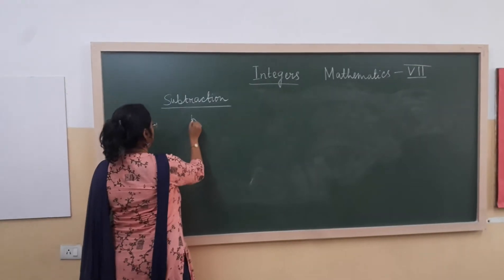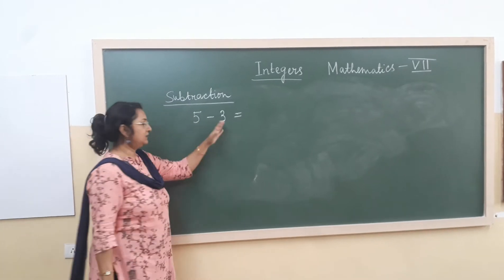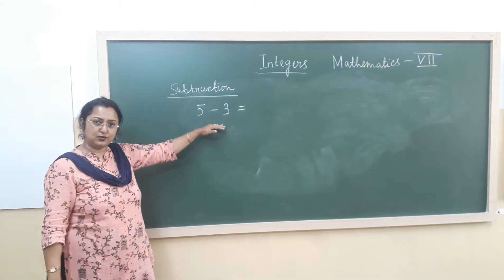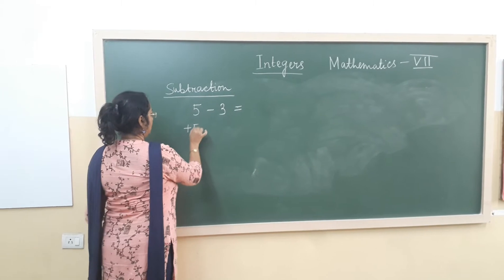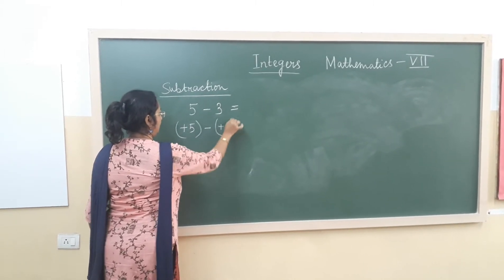Suppose we have taken 5 minus 3. We can directly subtract these two integers. So what we can write? Plus 5 minus plus 3.